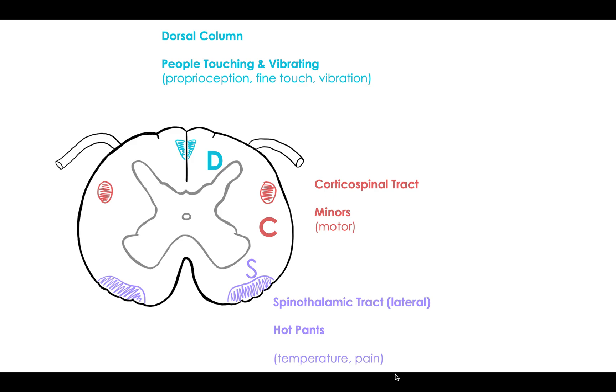So if you can remember, you call DCS when people are touching and vibrating minors, hot pants, then you can remember the different major pathways in the spinal tract.